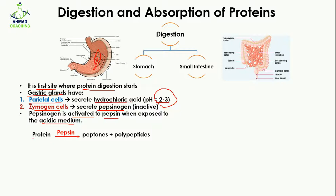This active pepsin acts on protein and digests it into peptones and polypeptides. Polypeptides are long chains of amino acids. Now, what is the purpose of producing pepsin as pepsinogen? Because pepsinogen is produced in the lining of the stomach and from there it is transferred to the central part where it digests the protein.